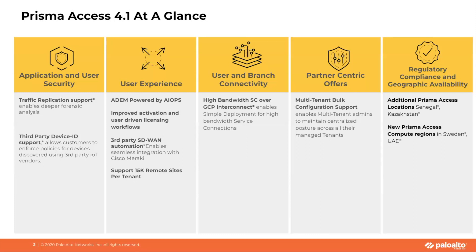We have significantly increased the number of remote sites that can be onboarded in a particular tenant — now we can support up to 15,000 remote sites and about 70,000 routes. We are also going GA with high bandwidth SC over GCP interconnect, also termed as Colo Connect. From a partner-centric, multi-tenant perspective, bulk configuration support will now be available based on a feature flag. We continue to add new locations and compute regions, and the admin guide and Prisma Access data sheet are updated accordingly.